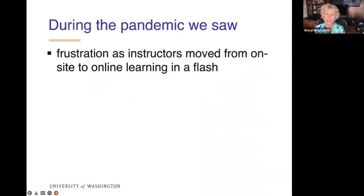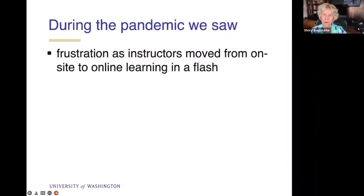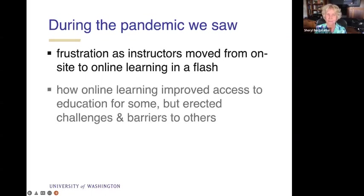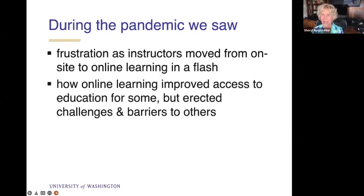During the pandemic, we saw a lot of things — frustration as some instructors moved from on-site to online learning in a flash. Many of us were teaching hybrid courses, which I do here at the University of Washington, already designed to be partially online and partially in class. But that's different than just being told tomorrow college students are going to be online. There were a lot of negative reactions from faculty and students about the quality of those courses.